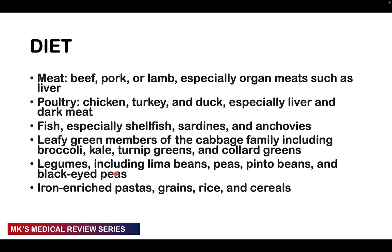Dietary advice: meats such as beef, pork, and lamb — especially organ meats like liver — have high concentrations of iron. Poultry such as chicken, turkey, and duck — especially liver and duck meat — also contain iron. Fish, especially shellfish, sardines, and anchovies, are good iron sources.